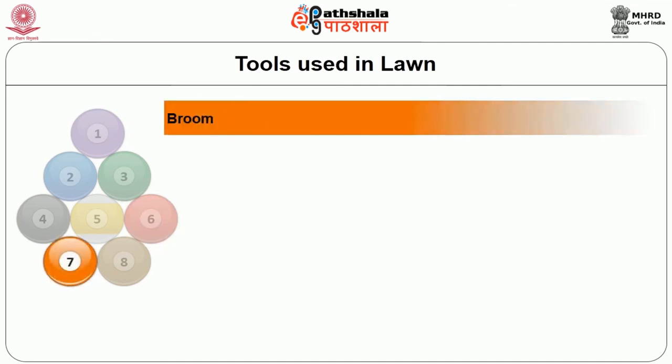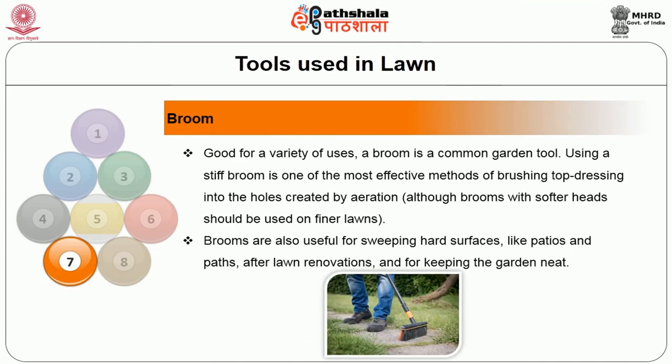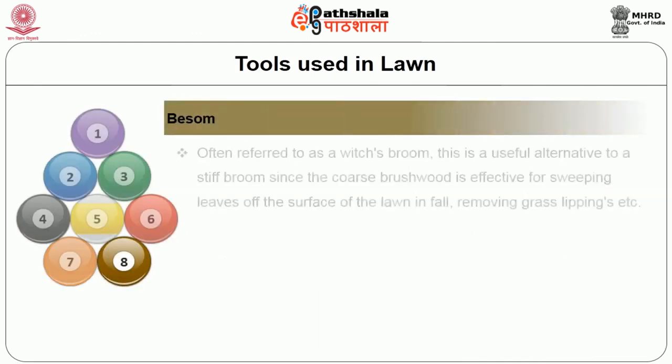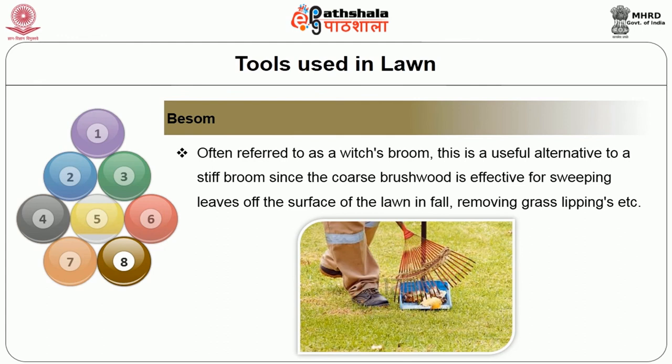The next tool is the broom. Good for a variety of uses, a broom is a common garden tool. Using a stiff broom is one of the most effective methods of brushing the top dressing into the holes created by aeration. Brooms are also useful for sweeping hard surfaces like paths after lawn renovations and for keeping the garden neat. The next is the besom, often referred to as the witch's broom. This is a useful alternative to the stiff broom since the coarse branchwood is effective for sweeping leaves off the surface of the lawn in fall and removing grass clippings.